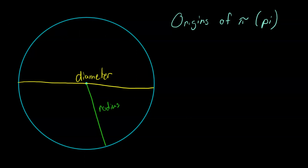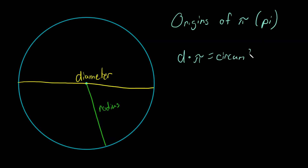So where pi comes in is that they were looking for some constant. It's easy to measure the diameter, but it's somewhat inaccurate to measure the whole circumference of the circle because measuring tools weren't so great. So they said we want some constant where we can say: D times some constant — we'll call it pi — equals the circumference. This is a formula you will come to know. You might also just write that as C equals the circumference.